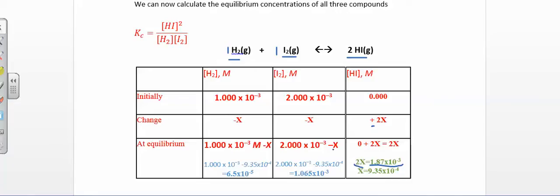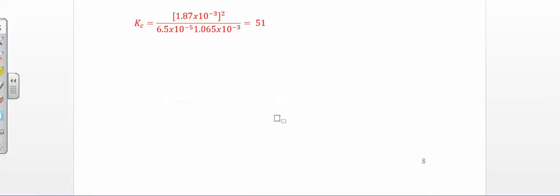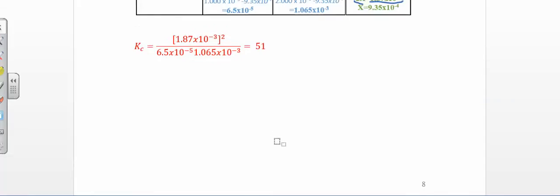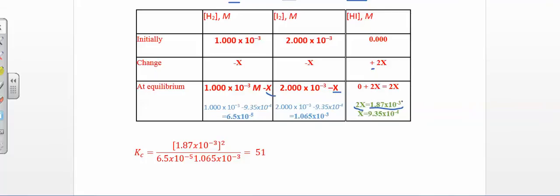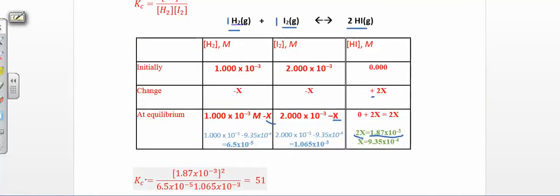This x applies to both reactant change terms. Plugging in: initial minus x gives the equilibrium concentration of H₂, and initial minus x gives the equilibrium concentration of I₂. Now I have all my equilibrium concentrations and can plug them into the equilibrium constant expression. Use 2x — which is 1.87×10⁻³ — for ammonia in the numerator, and 6.5×10⁻⁵ on the bottom for the reactants. Multiplying these out, you should end up with 51 as your equilibrium constant K.